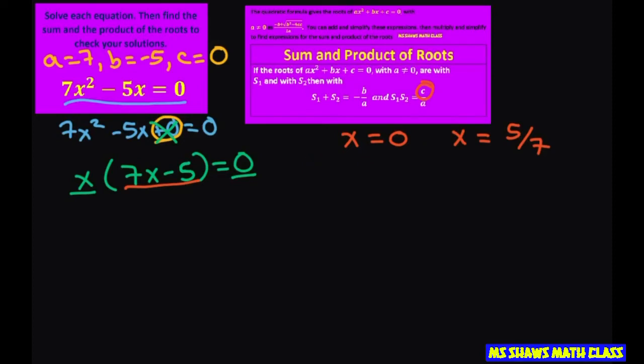Now we're going to use our sum and product of roots to check that we can get our A back, our B back, and our C back. So this is going to be called solution 1, and this one will be called solution 2.